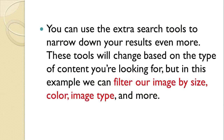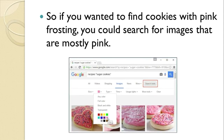Now you can use the extra search tools to narrow down your results even more. These tools will change based on the type of content you are looking for. But in this example, we can filter our images by size, color, image type, and more. So if you wanted to find cookies with pink frosting, you could search for images that are mostly pink.